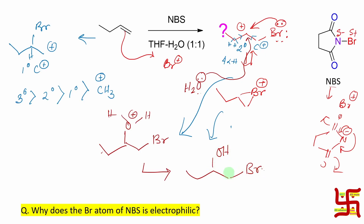In the next step, one proton is released and it produces the final molecule — a bromohydrin. This is the answer.